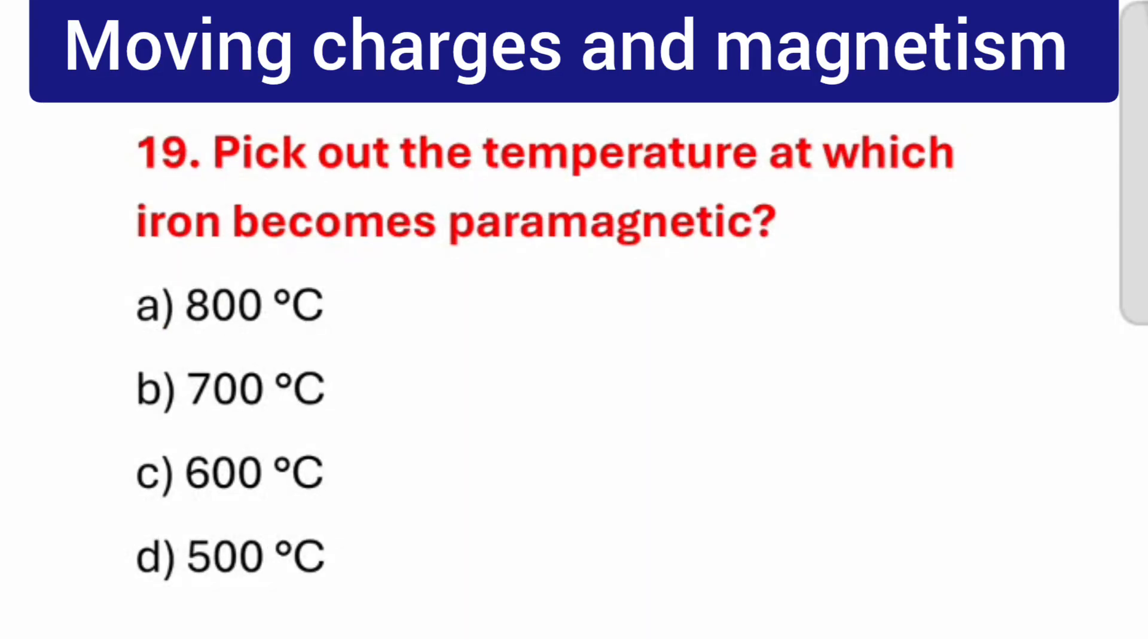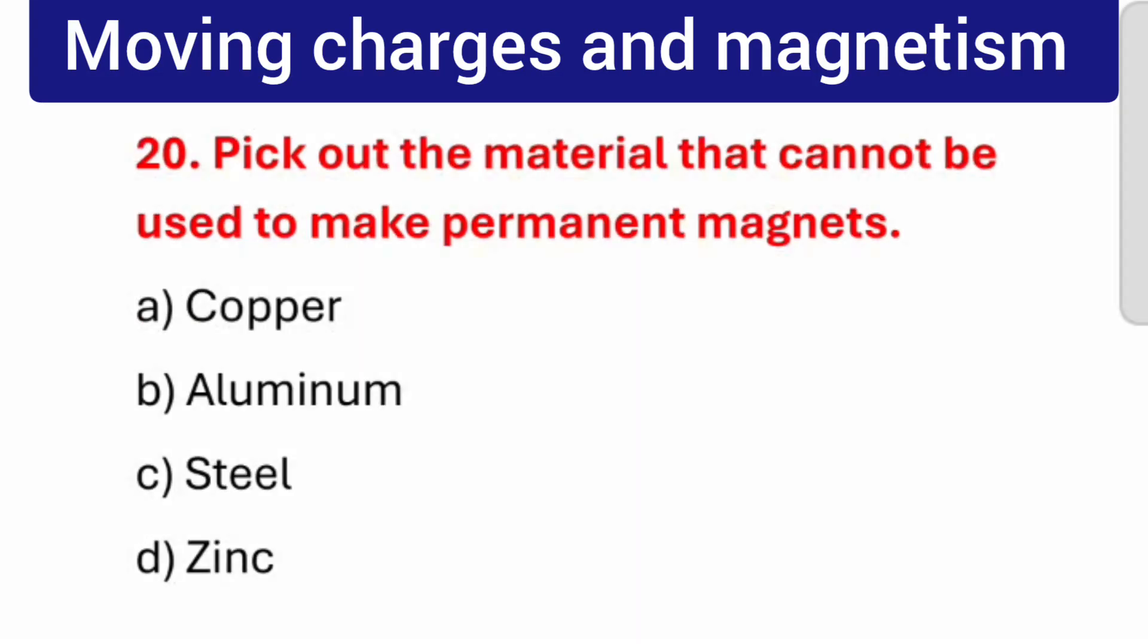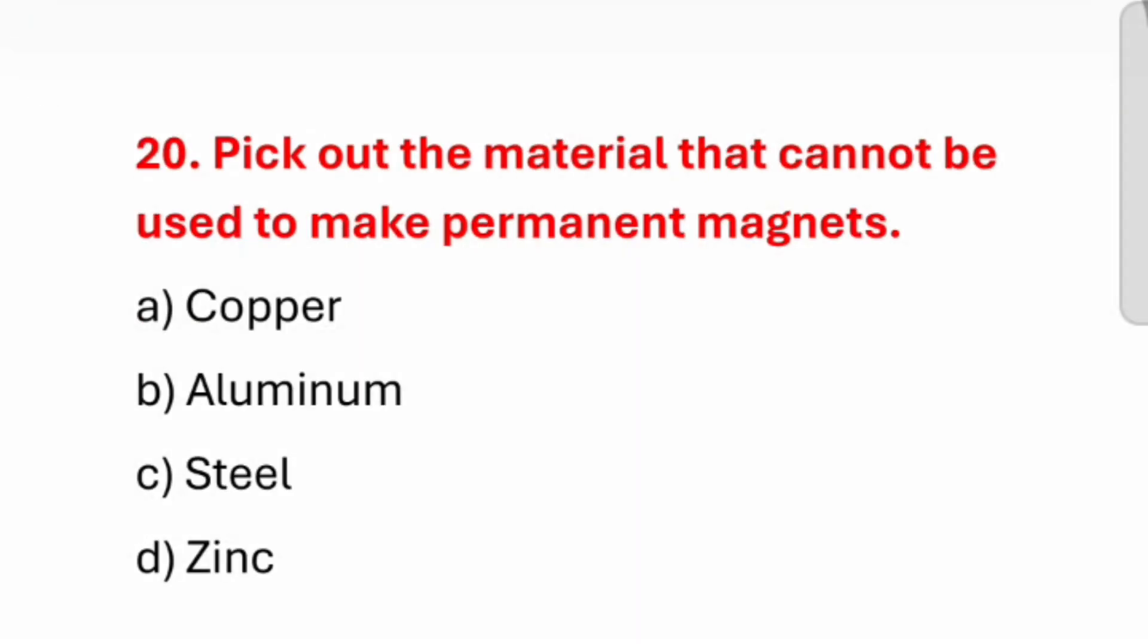Question number 19: Pick out the temperature at which iron becomes paramagnetic. The correct answer is 800 degree Celsius. And question number 20: Pick out the material that cannot be used to make permanent magnets. The correct answer is Zinc.